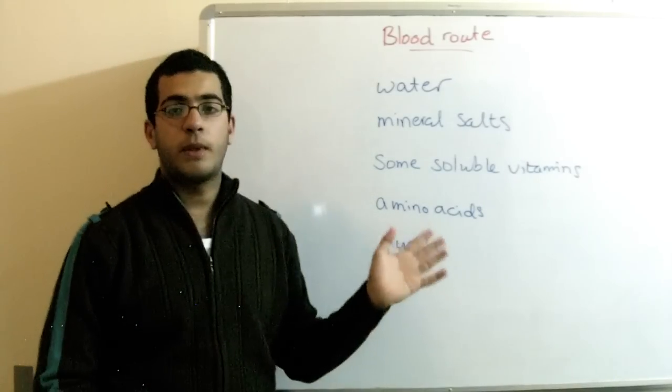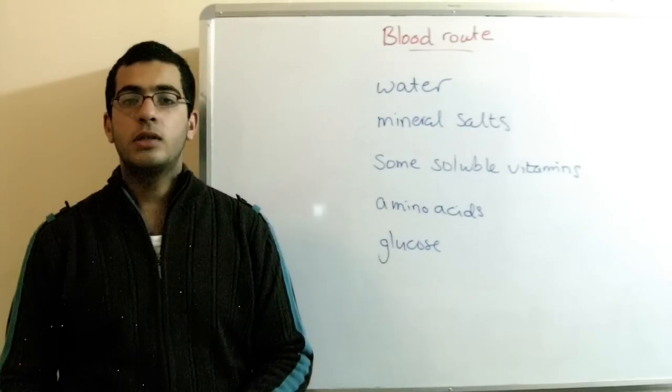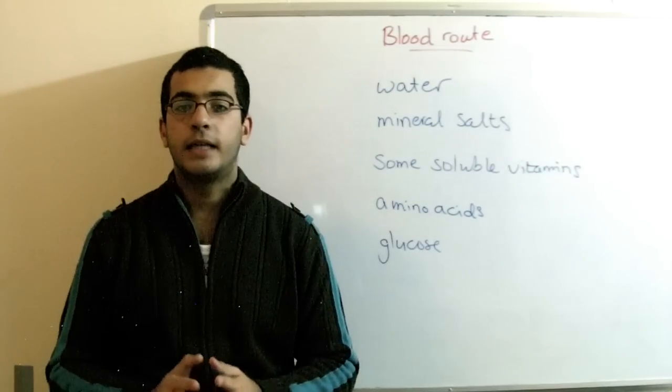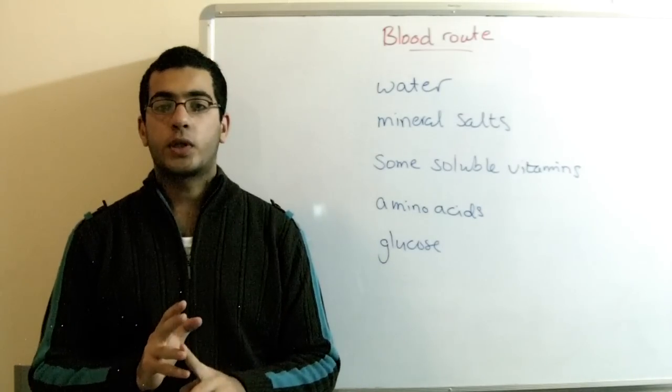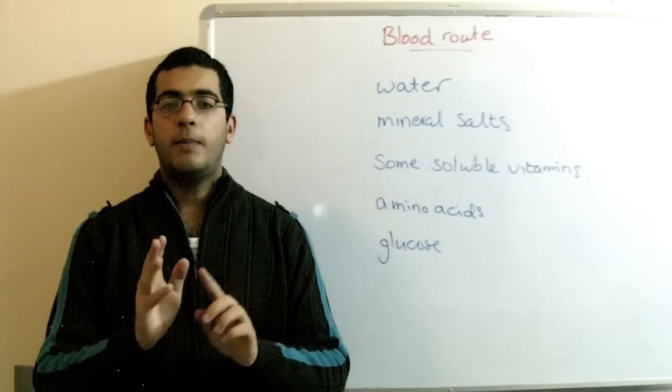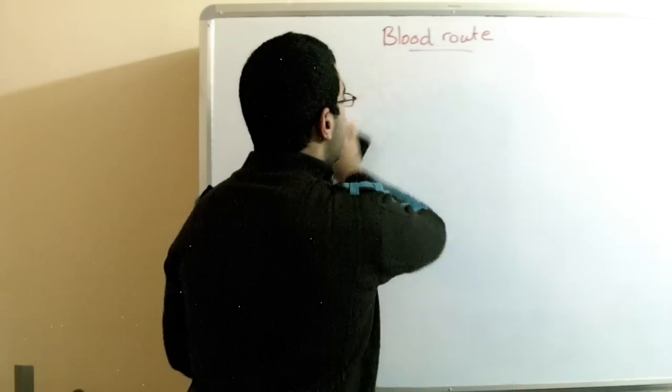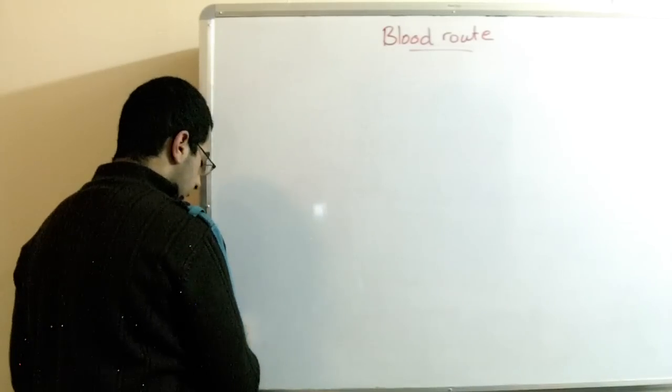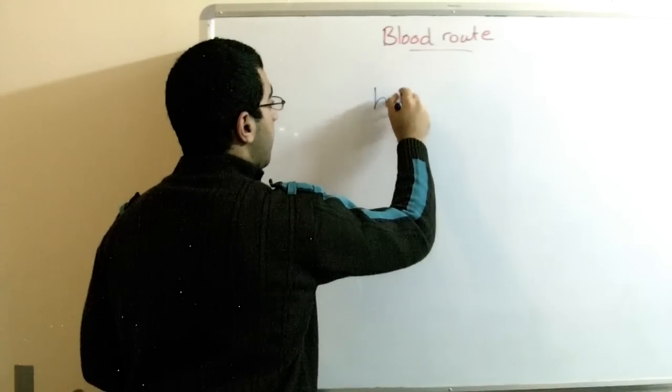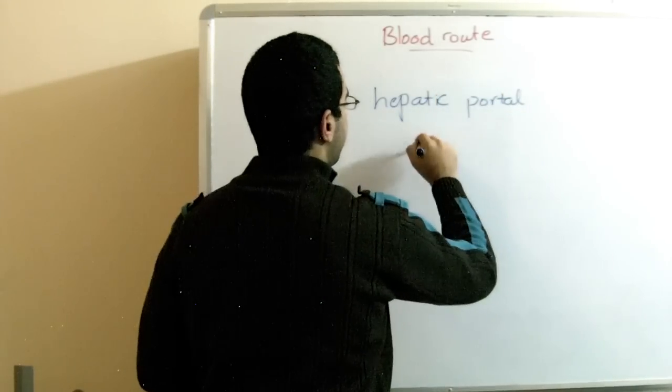These five kinds of food move through the blood route. They move through the blood vessels outside the intestines till they reach the hepatic portal vein. Hepatic refers to the liver, portal refers to the opening or the beginning. So they enter the liver through the hepatic portal vein.